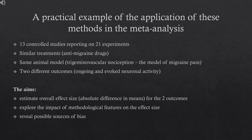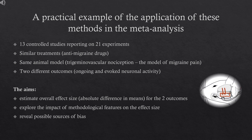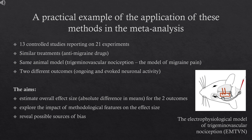I now present a practical example of the application of these methods in preclinical meta-analysis. I will report on our recent work, which included 13 controlled studies with 21 experiments. We were interested in experiments that tested the effects of anti-migraine drugs on two outcomes — ongoing and evoked neuronal activity — in the animal migraine model used in our laboratory. Our main aim was to estimate the overall effect size to guide sample size calculations in future studies. To refine the model, we also examined how methodological features affected the results and identified potential sources of bias.